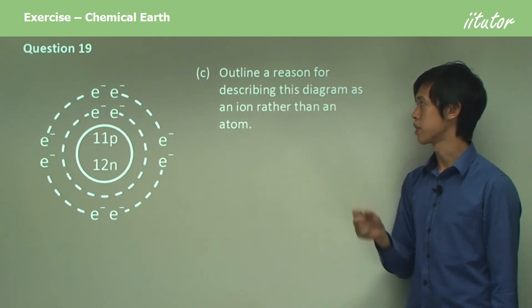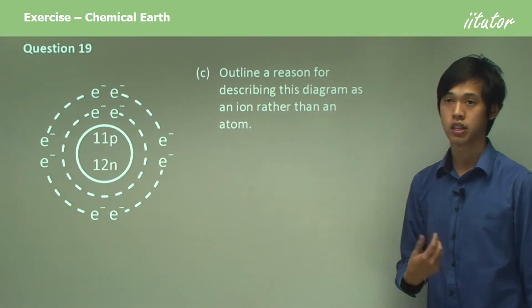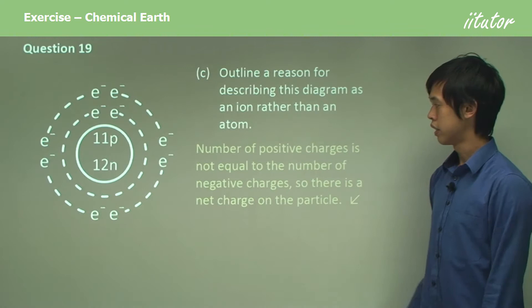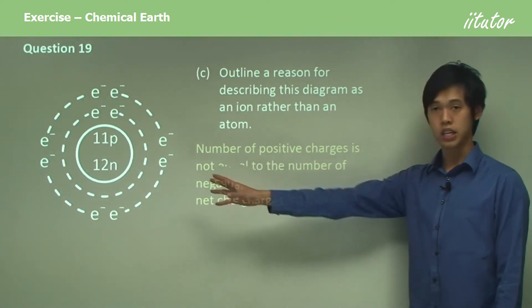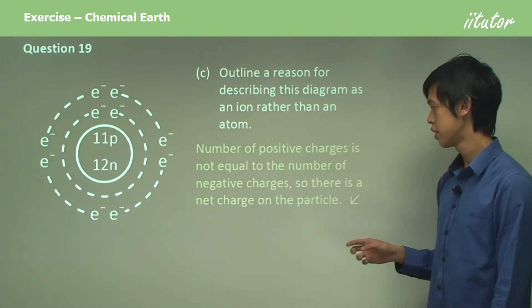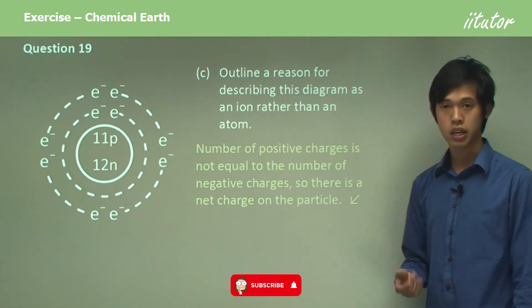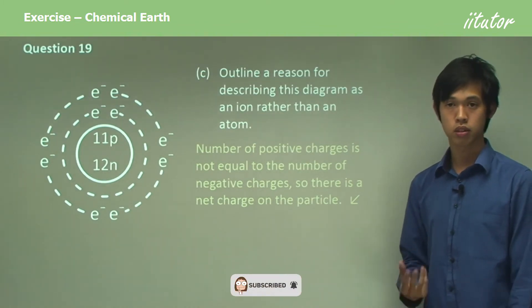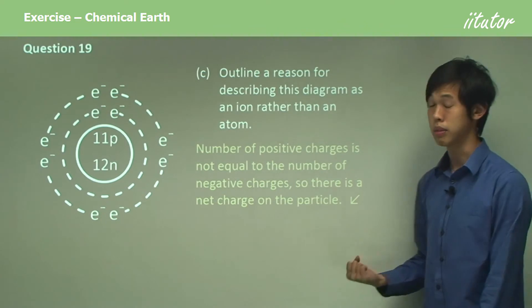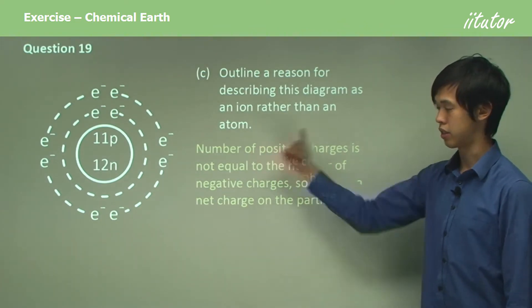And outline a reason for describing this diagram as an ion rather than an atom. Well, the number of positive charges is not equal to the number of negative charges. So there is a net charge on the particle. So it can't be an atom, because all atoms are electrically neutral. So it must be an ion. And that's why.